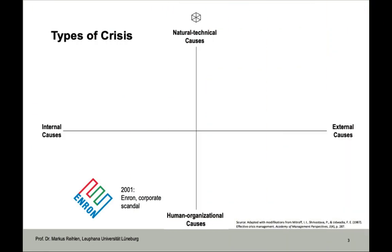Before we understand crisis management, it is important that we can distinguish different types of crisis. We differentiate between crises that arise within the organization and those that arise outside it. This distinction is critical because the weak signals will be different for each type of crisis. We also distinguish between crises caused by natural or technical causes and those caused by people and organizational breakdowns.